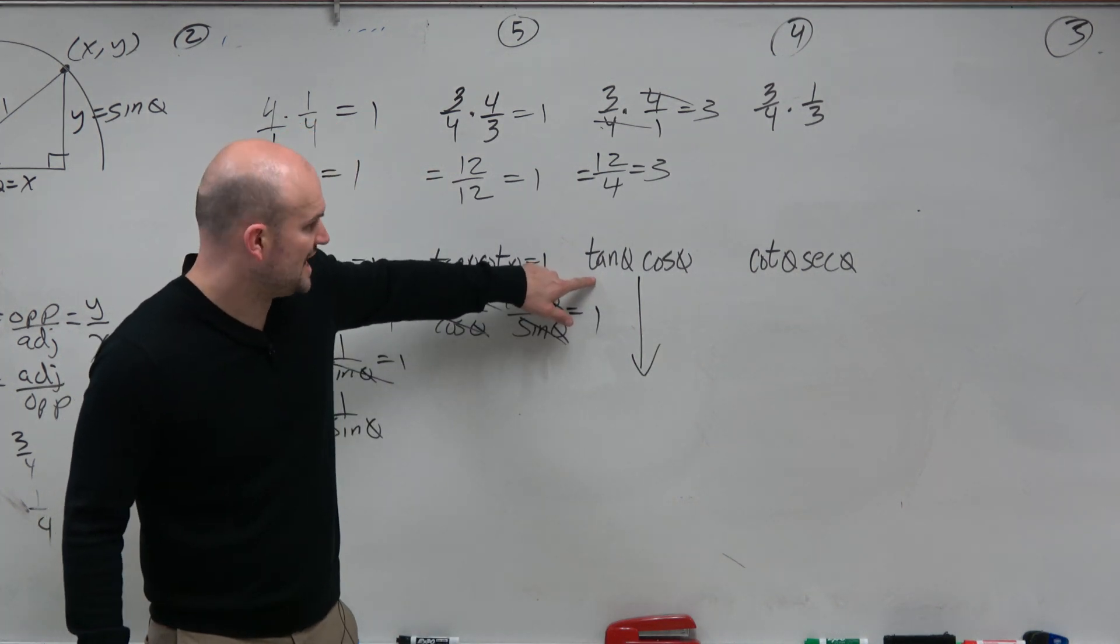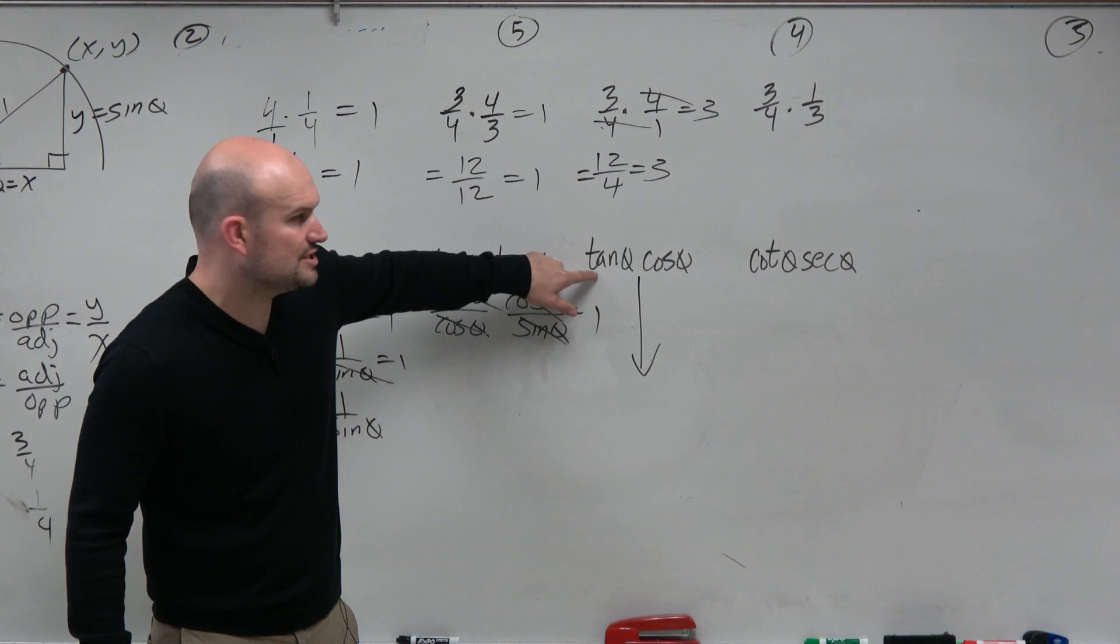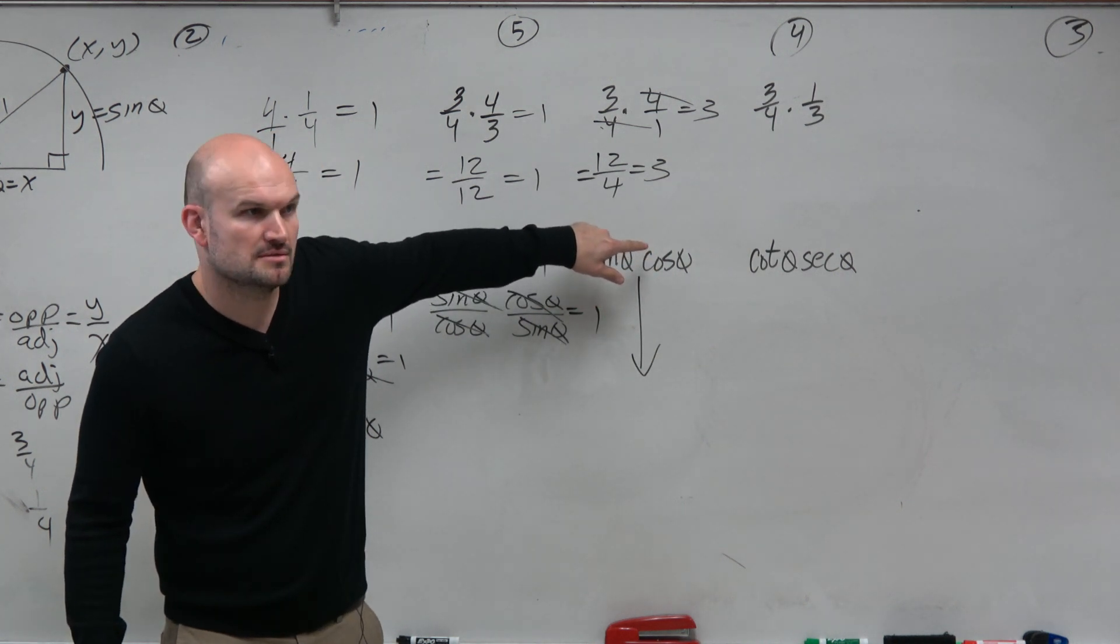So here's where things start to get a little confusing. Do I want to write tangent? If I write tangent as 1 over cotangent, does that divide out anything with cosine? No.